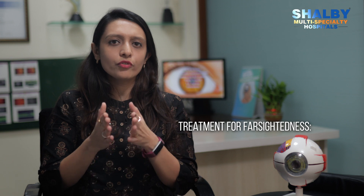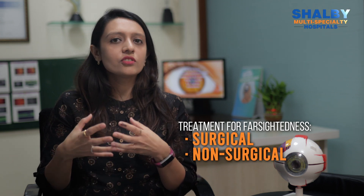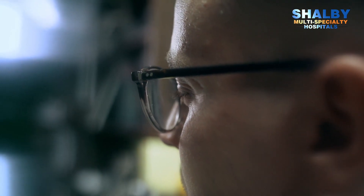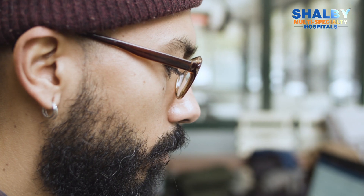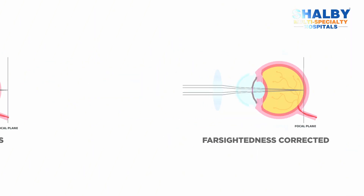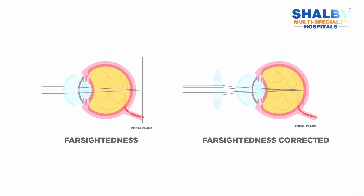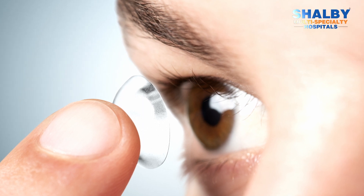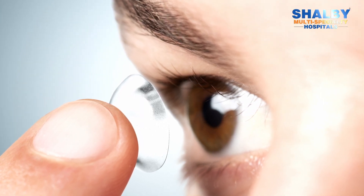Once diagnosed with farsightedness, you proceed to the treatment aspect. Treatment consists of two parts: surgical and non-surgical. Non-surgical is most common and includes glasses or contact lenses. Glasses work by placing a lens in front of the eye that helps to focus rays coming from far away through the cornea and lens onto the retina, instead of behind it. When rays fall on the retina, it gives a clear image to the brain. We use convex glasses that converge the rays onto the retina. Contact lenses are placed on the surface of the cornea and similarly help to focus on the retina.